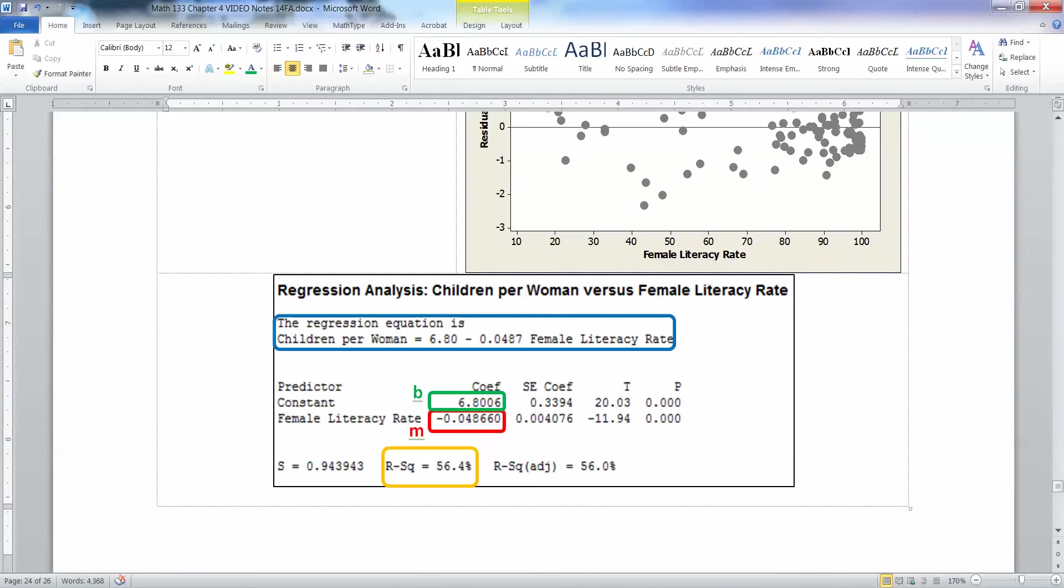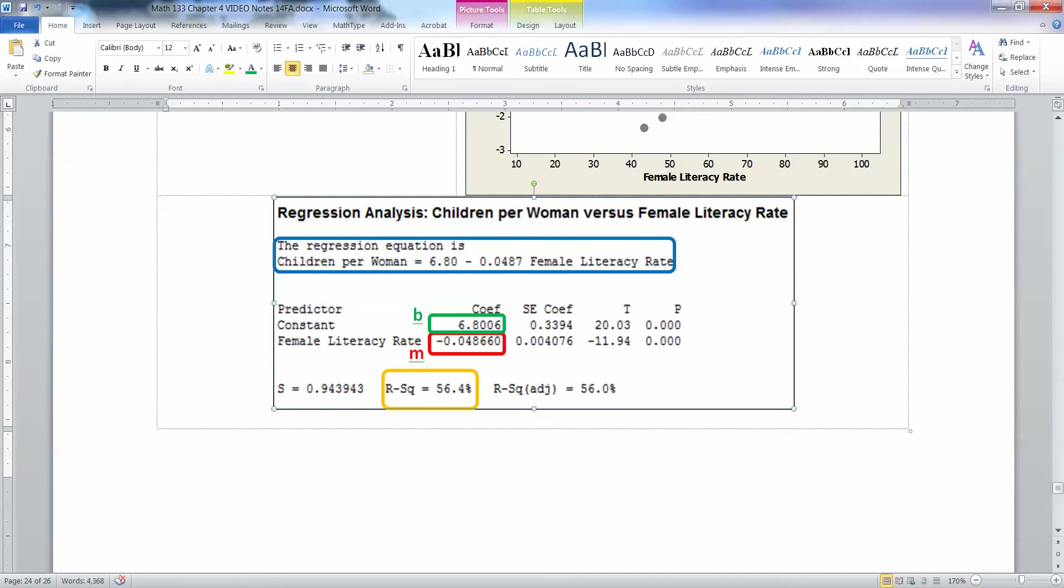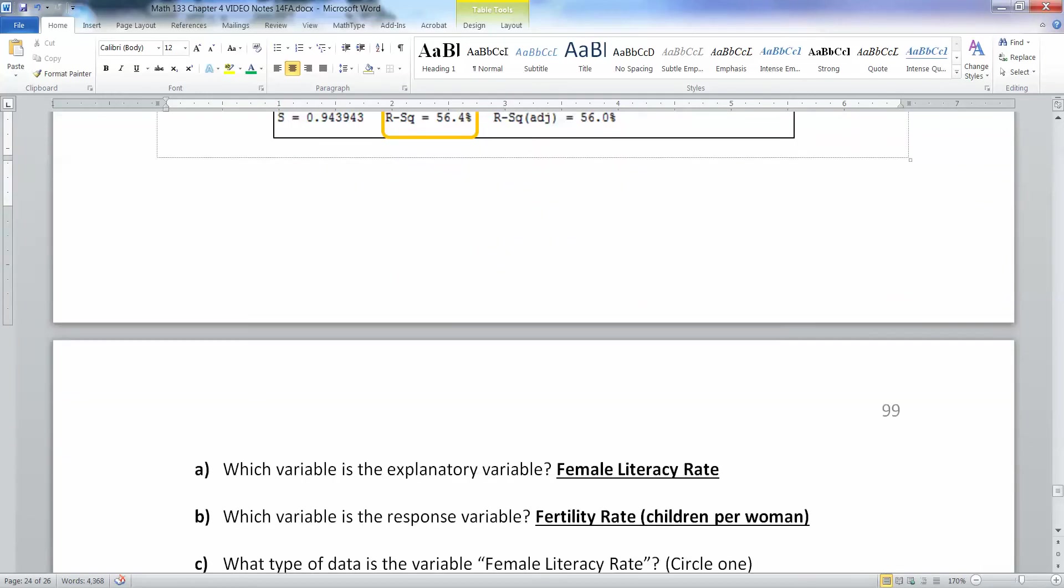And then down here, I have a Minitab regression analysis. And I've already colored some of these things, because we're going to need them a little bit later. But I want you to see, up at the top, it says the regression equation is this. It is giving you your y equals, it's not mx plus b, it's actually b plus mx. They kind of do it backwards here. And then we have some information down here that we'll parse apart soon. And then the R squared value right here. Those pieces that I've circled, those are the important parts of this little output. You basically ignore the rest of it, unless you're in chapter 14.